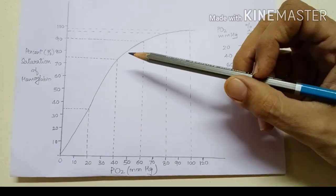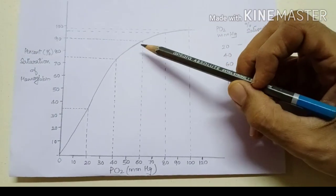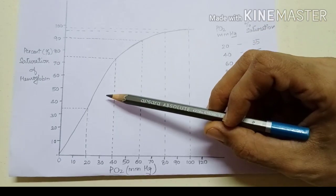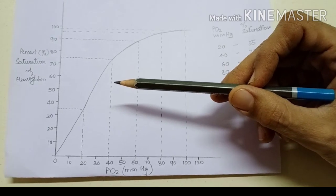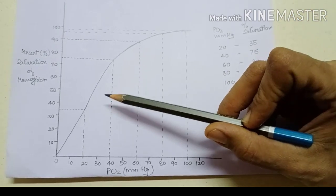The second part is the steep part. You can see below 60 mmHg PO2, when the PO2 falls below 60 mmHg, the curve becomes steeper.